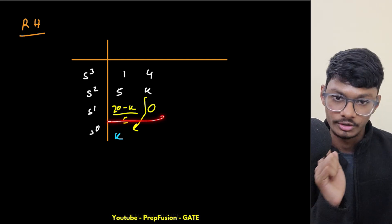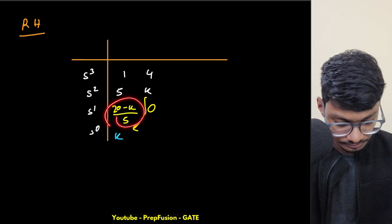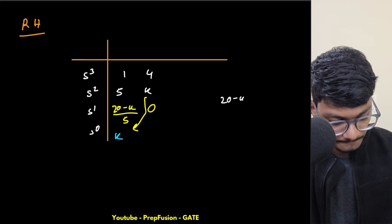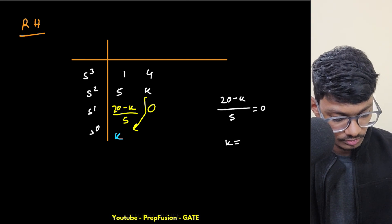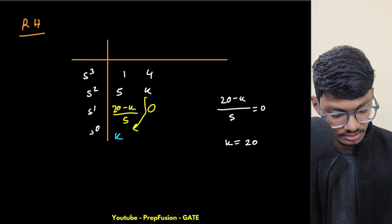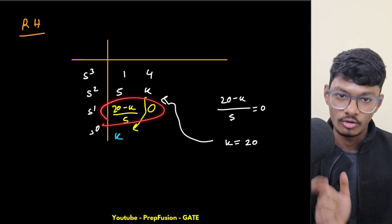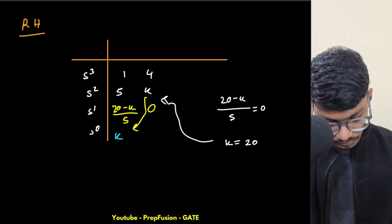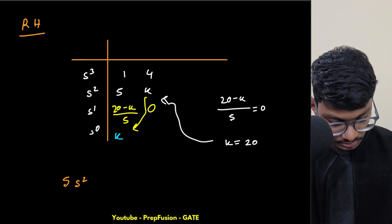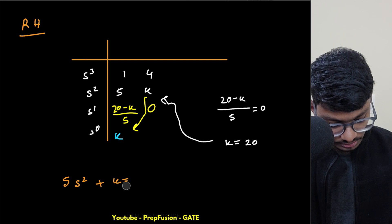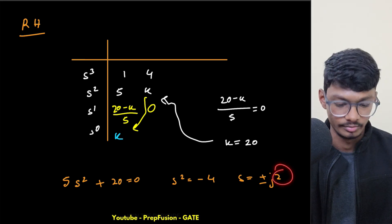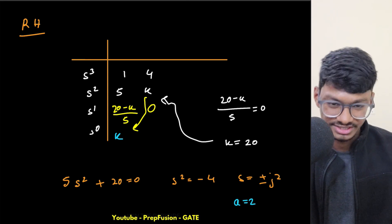For marginal stability, we need a row of zeros. Setting (20 - k)/5 = 0 gives k = 20. The row above the zero row gives the auxiliary equation: 5s² + 20 = 0, so s² = -4, meaning s = ±j2. Therefore a = 2. Very simple — if you know the concepts, it's straightforward.